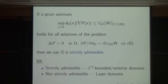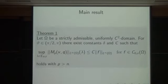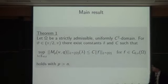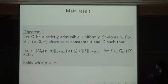Using this pressure estimate, we are able to estimate the resolvent. Here is our main result: let omega be a strictly admissible domain with uniformly C2 boundary. For theta between pi/2 and pi, there exist constants delta and C such that the sup-norm of M_p of the resolvent is bounded from above by the sup-norm of external force F, provided p is greater than n.